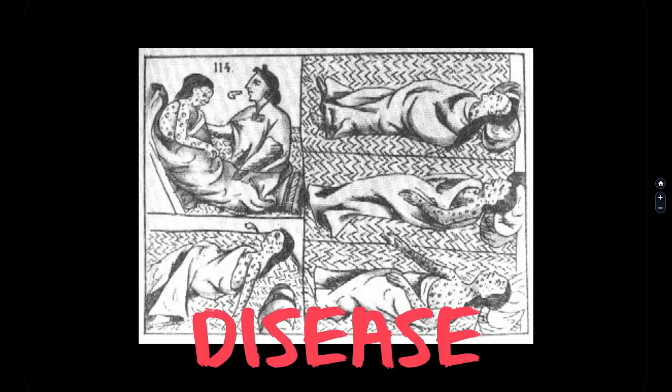Everywhere they went, the first European explorers and colonists reported horrifying and unprecedented epidemics among the Native peoples they encountered. Spanish soldiers first exposed indigenous people to diseases they had no experience with, and therefore no natural immunities or medicines to combat. These diseases spread rapidly into epidemics everywhere Europeans went, and even preceding their arrival sometimes. Diseases Europeans brought included measles, scarlet fever, typhoid, typhus, influenza, whooping cough, tuberculosis, cholera, diphtheria, chickenpox, and a whole range of sexually transmitted diseases.